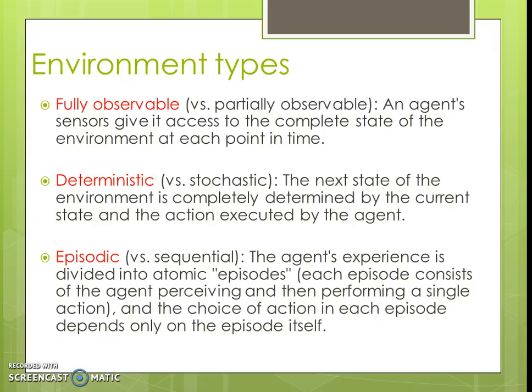The first property is fully observable versus partially observable. A fully observable environment is defined as one where an agent's sensors give it access to the complete state of the environment at each point in time. For example, in Tic-Tac-Toe or chess, the agent may read the board through sensors. All the sensors' information combined together will be one percept, and this one percept will be enough to understand the state of the environment, so the agent will be able to decide on an action — making it a fully observable environment.